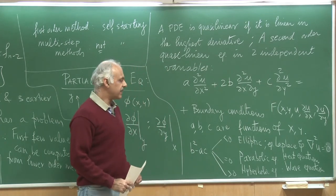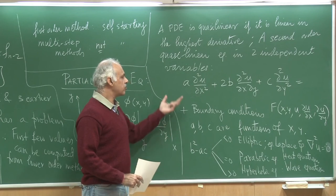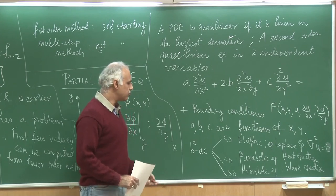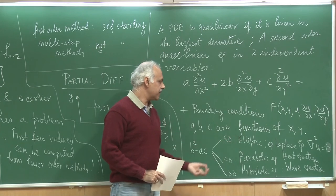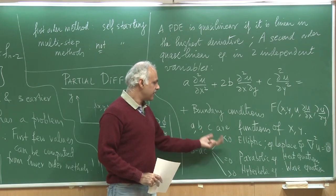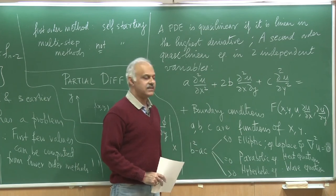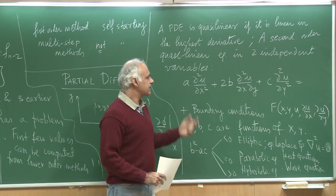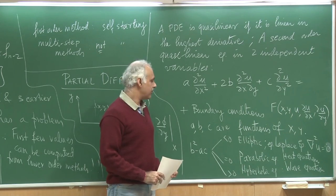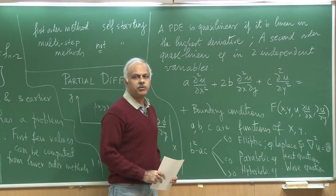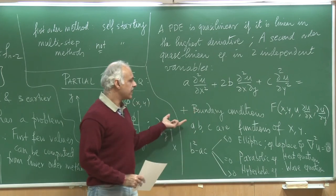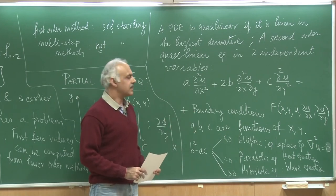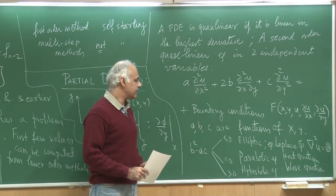The idea is that any numerical method you devise to solve this partial differential equation must respect the physics. If I choose a method to solve the Laplace equation, which is elliptic, and try to use the same method to solve the heat equation, which is parabolic, things could go wrong. It is always a good idea to identify what is the physics of the problem in terms of one of these three classifications and then use an appropriate method. The boundary conditions would also have to be specified depending on the kind of differential equation you have.